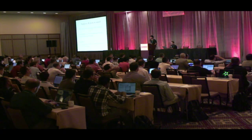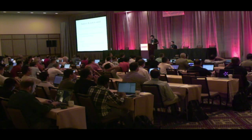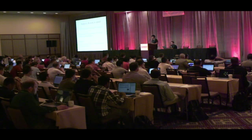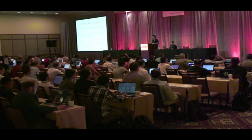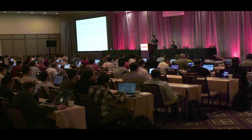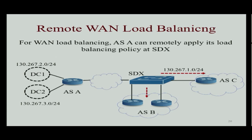Another important feature is that ASes can control exchange traffic remotely — they don't need to be directly connected to the exchange point. For example, an AS that figures out a set of ASes have problems — routers down or other issues — can write a policy remotely at the exchange point to avoid those AS paths being selected. Similarly, ASA can be remotely connected to the SDX but still have the load balancing task offloaded to the SDX.